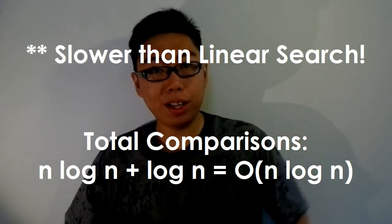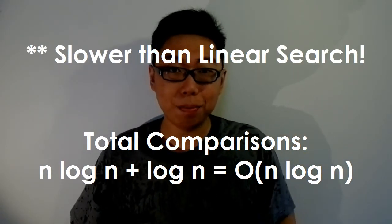And that, in fact, is slower than just doing a linear search. So what this means is, if you're given an unsorted list, you would rather do a linear search, because sorting first, and then using binary search, is going to take more time.